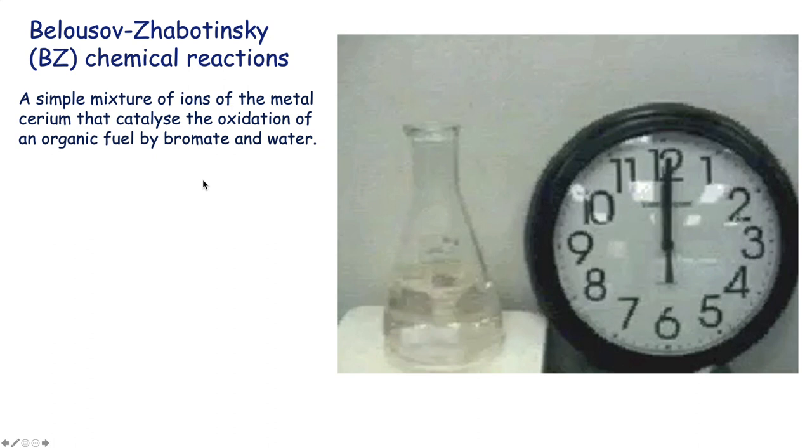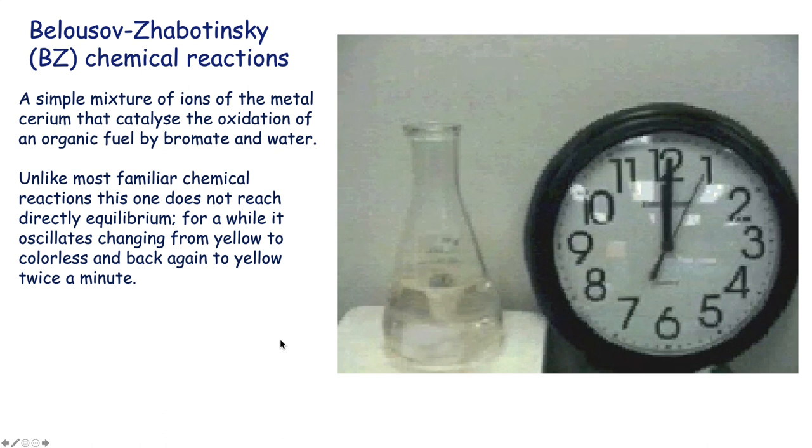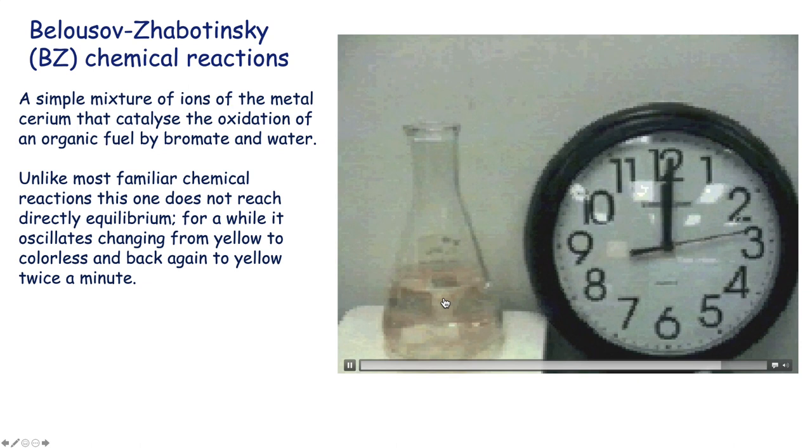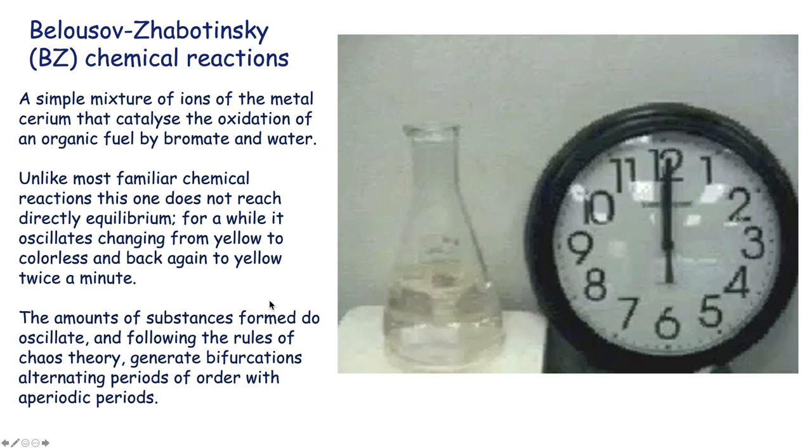Then we have something extraordinary happening in the 1950s and 60s. The very Belousov-Zhabotinsky chemical reactions, where a simple mixture of ions of the metal cerium that catalyzed oxidation of organic fuel by bromide and water, produces something extraordinary. Unlike most familiar chemical reactions, this one does not reach direct equilibrium. For a while, it oscillates changing from yellow to colorless back again to yellow twice a minute. This shows this event. In a flash, you can see a chemical reaction occurs and oscillates back and forth. And yet, this is supposed to end eventually in a steady state, in a complete equilibrium, like all chemical reactions do. The amount of substances formed do oscillate following the rules of chaos theory, generate bifurcation, alternating periods of order with periods of disorder, just like I showed you before. So this shows that even in a simple chemical system, this happens.